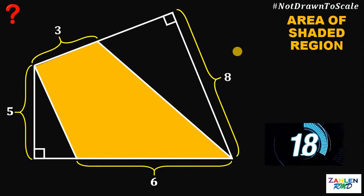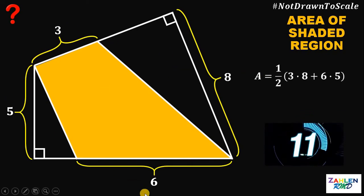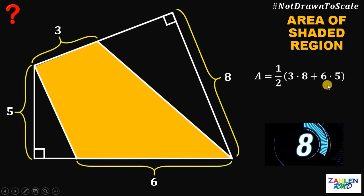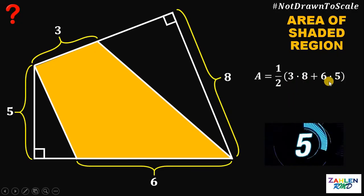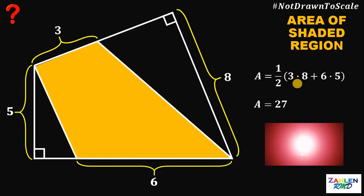The area of the shaded region must be equal to 1 half times 3 times 8, plus 6 times 5. Now, 3 times 8 is 24, and 6 times 5 is 30. 24 plus 30 is 54, and 54 divided by 2 gives us 27. Therefore, the area of the shaded region must be equal to 27 square units.